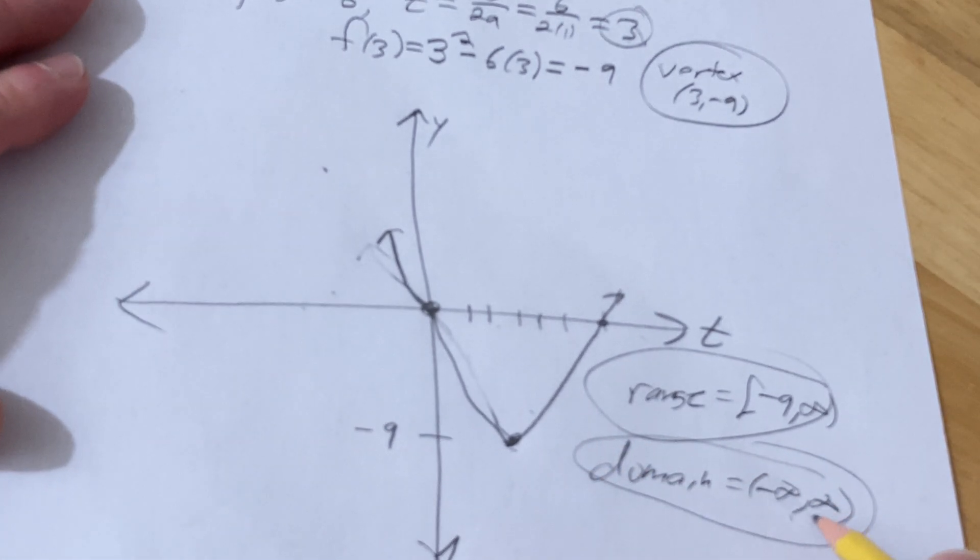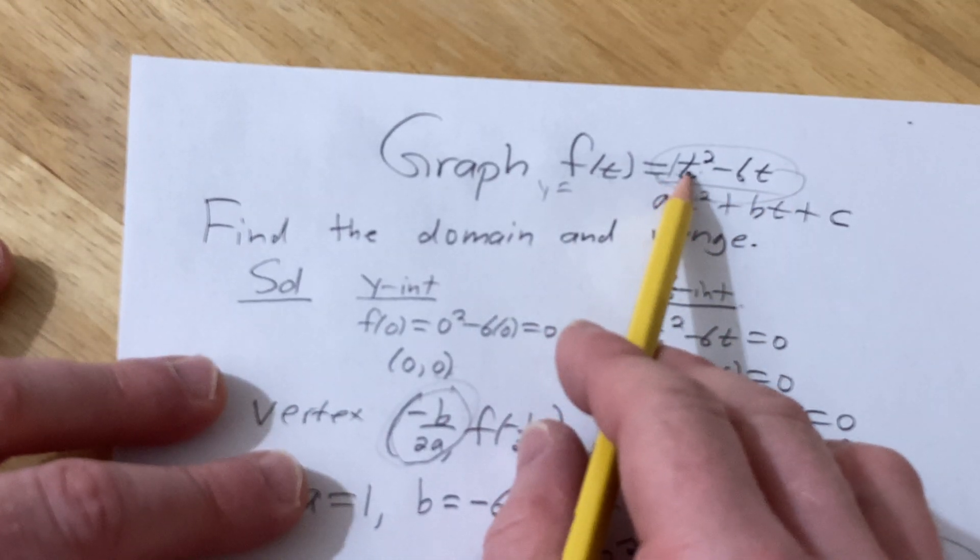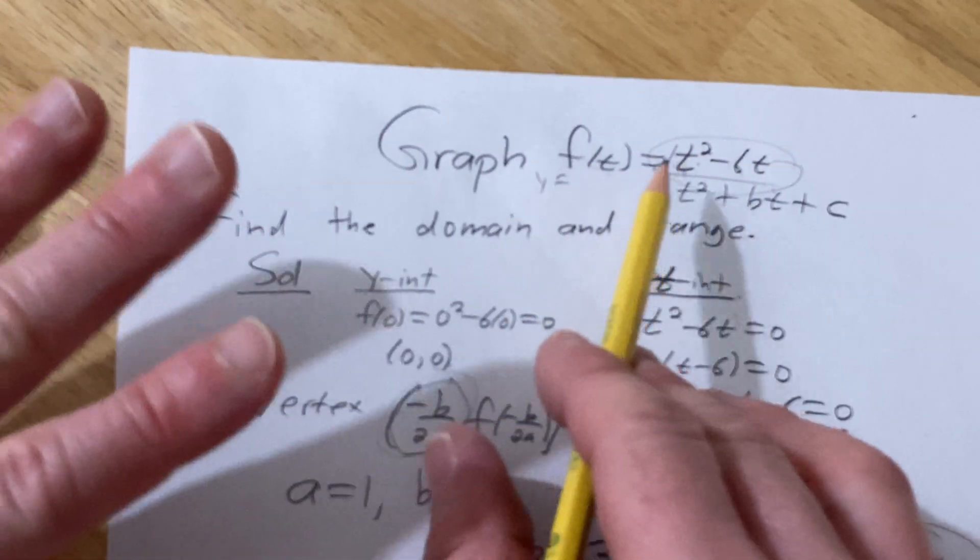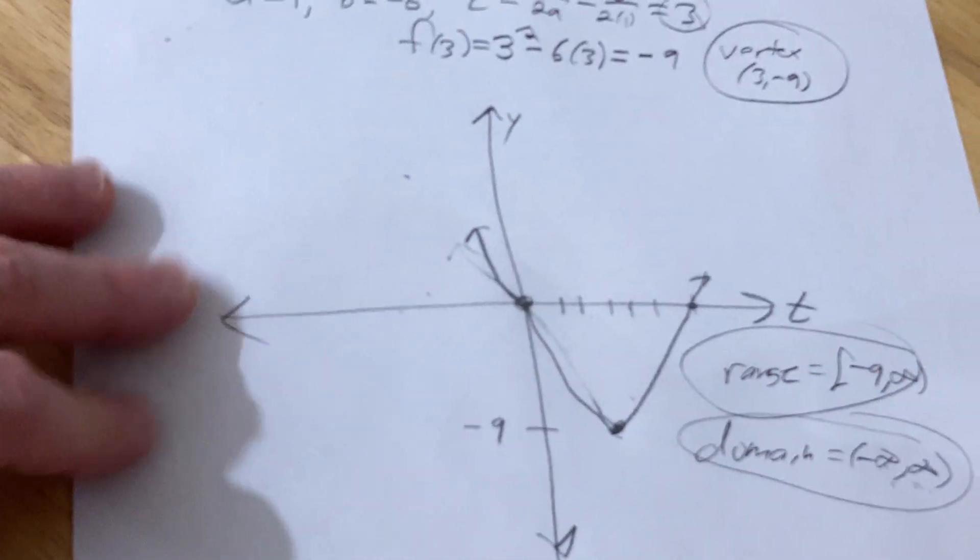You can also get the domain by looking at the original function. Let me show you. If you just look here and you ask yourself, what can't I plug in? Nothing. You can plug in anything. There's no fractions, there's no square roots. So anything goes, so the domain is all real numbers. I hope this video has been helpful to you. Good luck.